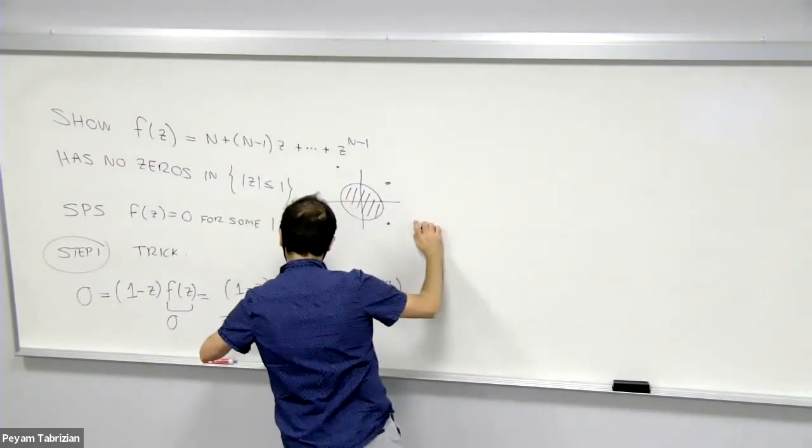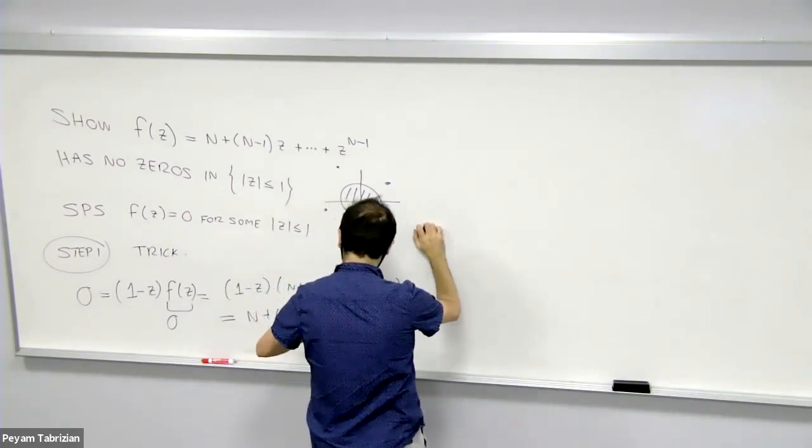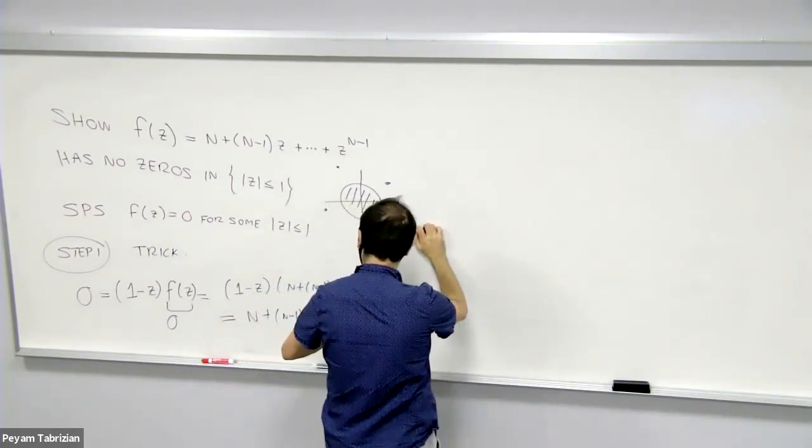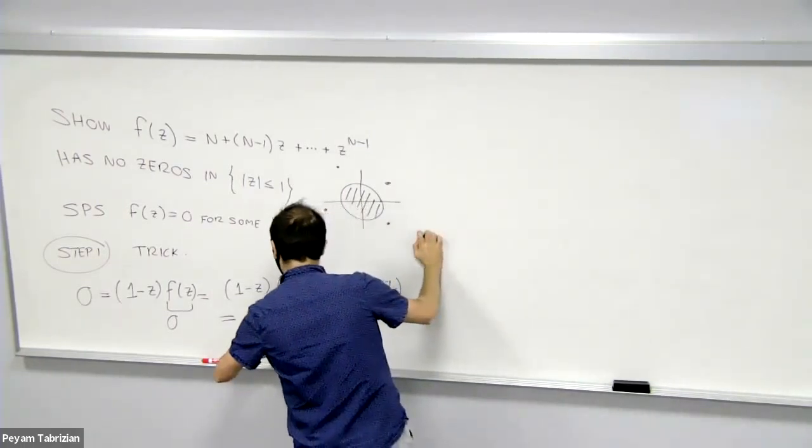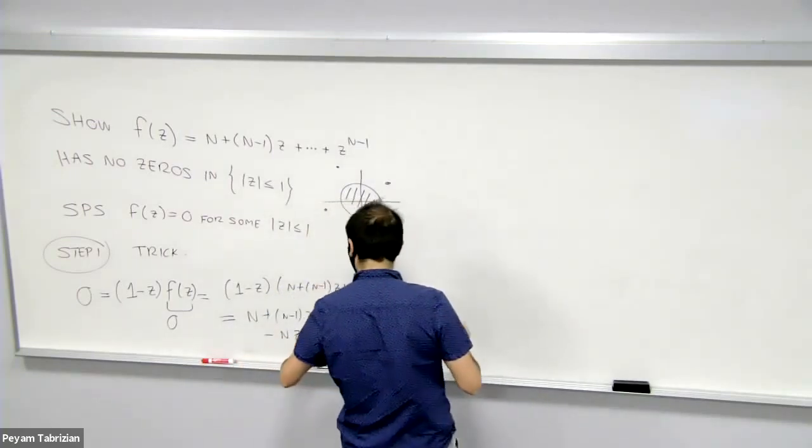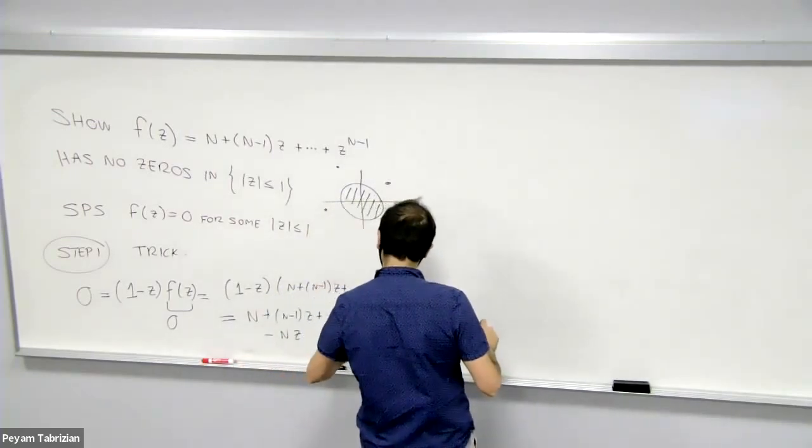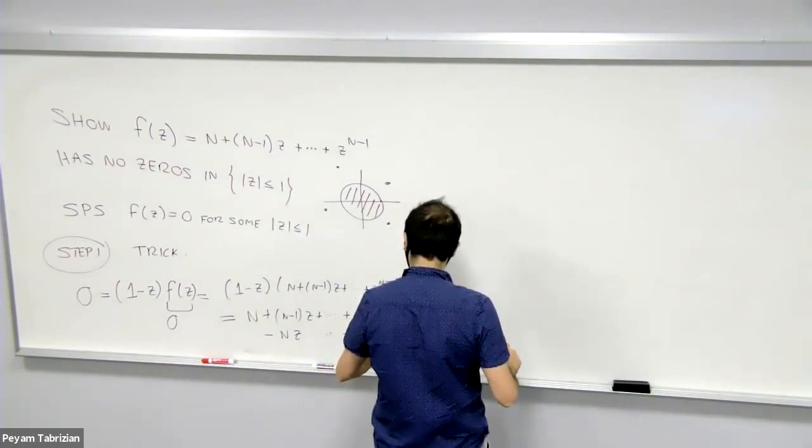we get n + (n-1)z + ... + z^(n-1). And then minus, I believe, nz - (n-1)z^2 ... - 2z^(n-1) and then - z^n.